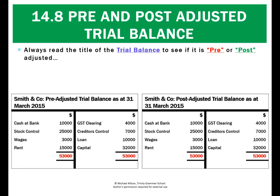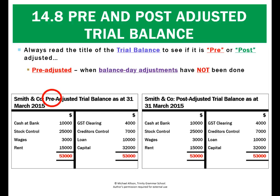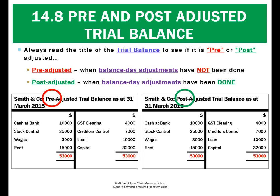We've got the same company with the same trial balance with the same numbers. The only difference is the one on the left is pre-adjusted, which means the balance day adjustments have not been recorded yet, and the one on the right is post-adjusted, which means the balance day adjustments have been recorded in the amount shown.